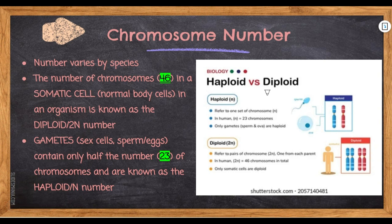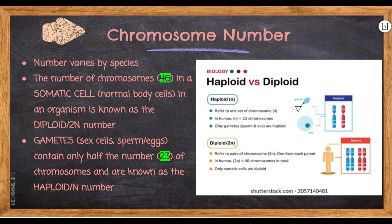Gametes only have 23 chromosomes and are known as haploid, or n cells. You'll find haploid cells in sperm or eggs. Diploid is 46 and you'll find those in somatic cells, which are pretty much all the other cells in the body.